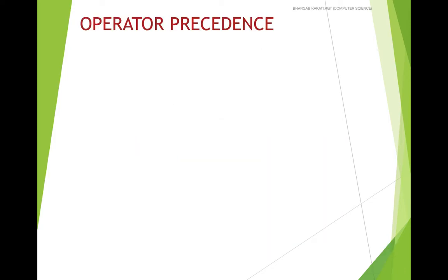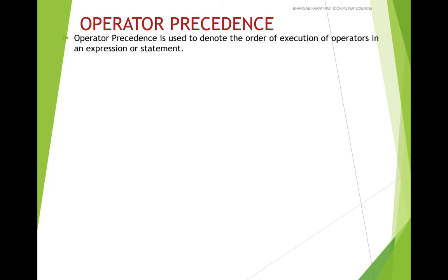What do we mean by operator precedence? In Python, there are various operators, but if more than one operator is used together, which operator will be executed first, which will be done second — that decision is made with the help of operator precedence. Operator precedence is used to denote the order of execution of operators in an expression or statement.